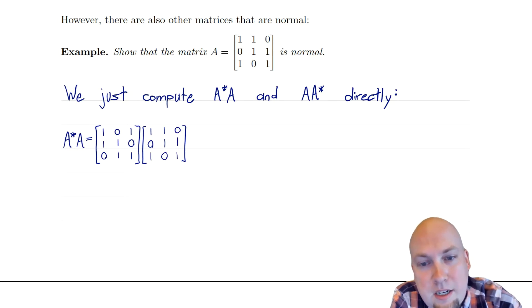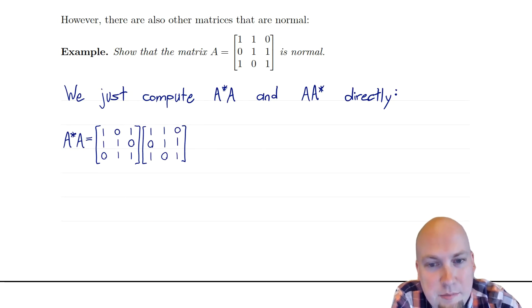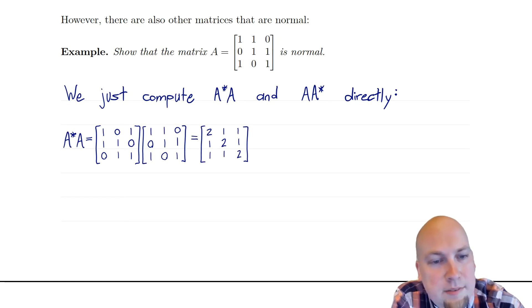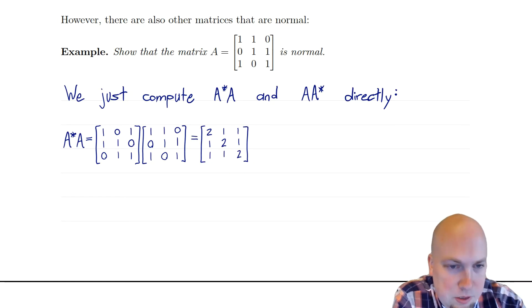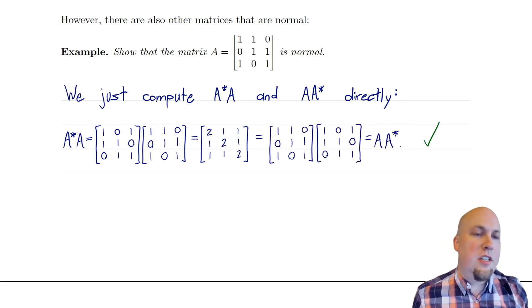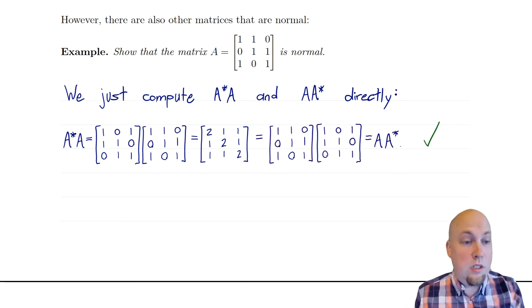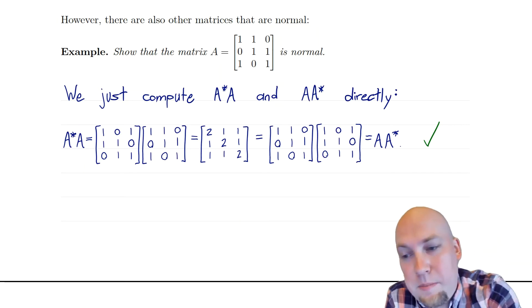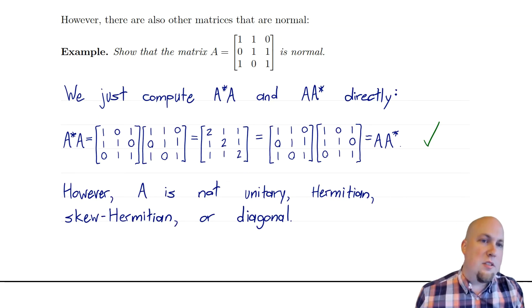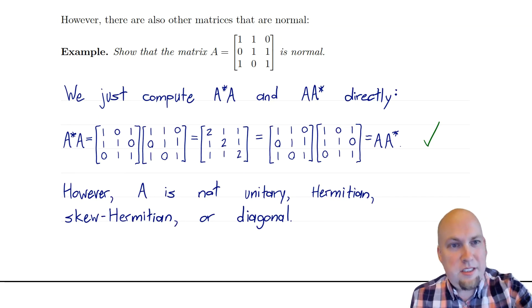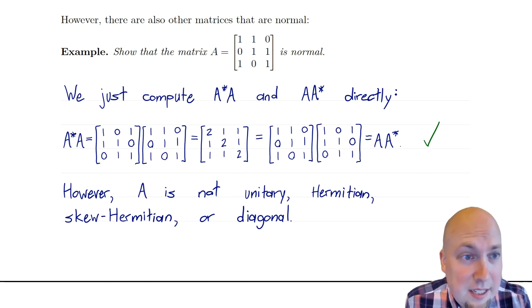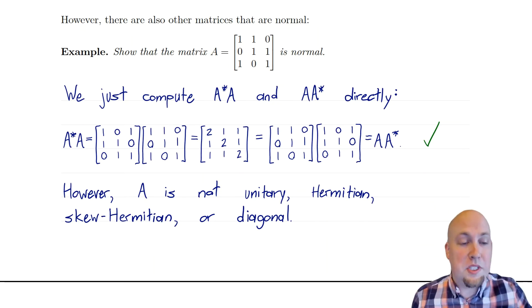To see that it is a normal matrix, you just compute these two products: A*A and AA*. If they equal each other, it's normal; if they don't, it's not. So let's do the product. A*A is just the product of these two matrices here, and when you do that matrix multiplication, you get the matrix with ones everywhere except twos on the diagonal — that's 2,1,1 / 1,2,1 / 1,1,2. And then it's just a calculation to check that if you do the product in the other order, you get the exact same thing. It's also straightforward to check that this matrix is not unitary, not Hermitian, not skew-Hermitian, and not diagonal. So normal matrices are a proper superset of all of those.